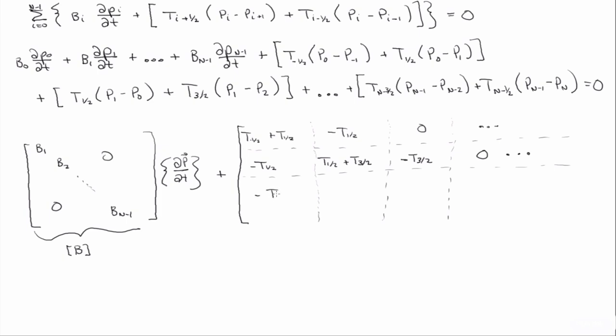So, here we're going to have t to the minus half plus t to the half minus t to the half zero dot dot dot. We have minus t to the half plus t to the three halves minus t to the three halves zero. And minus t to the three halves. We didn't write out any more terms. So, zero minus t to the three halves would be here. And then you would just continue. t to the three halves plus t to the five halves minus t to the five halves. We didn't write out the rest, but it would just continue like that to where, in the end, the last grid block would have t to the n minus three halves plus t to the n minus a half.